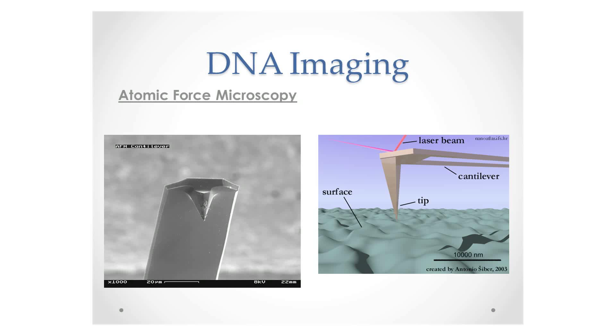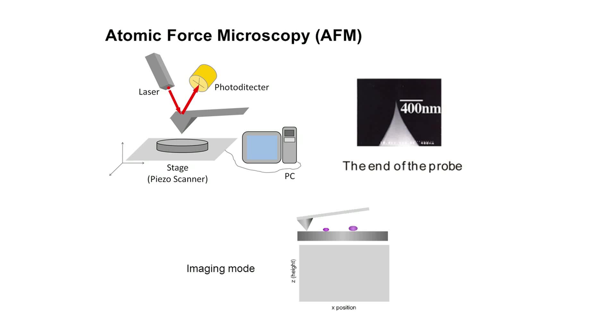Atomic force microscopy uses a probe to detect matter on a nanoscale. The probe measures any elevations on a microscope slide due to the presence of DNA. This is done by the reflection of a laser off the cantilever shown in the diagram. If the surface is raised, the reflected angle changes, which is shown as a colour change on the image produced.